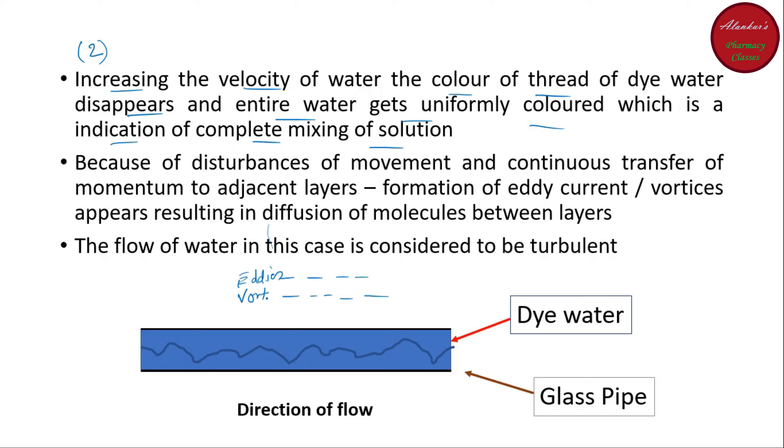And that is why the arrangement of molecules become disturbed. And that is why there is an intermixing of the molecules between the layers. And here you can see the whole water is now becomes colored because of the presence of dye. And this is because of the flow of water in this case is become turbulent simply.